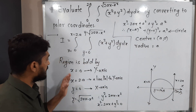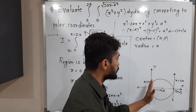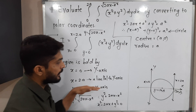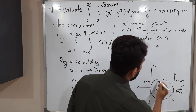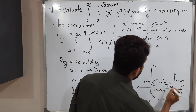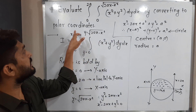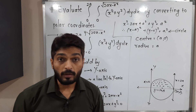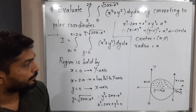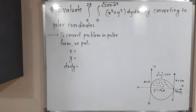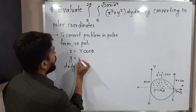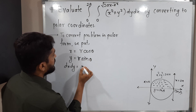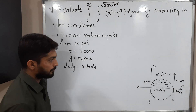So this is the region of integration. Now we have to convert the problem into polar form. To convert to polar form we use the standard substitution: x = r cosθ, y = r sinθ, and dx dy = r dr dθ.